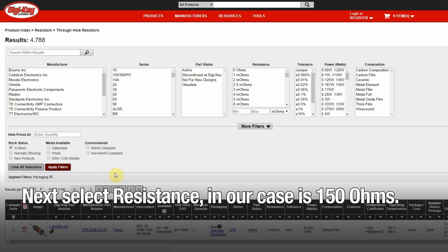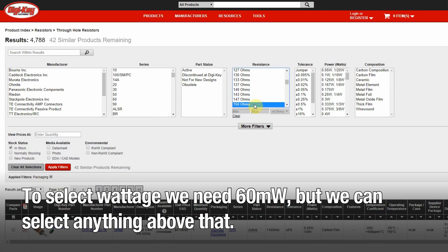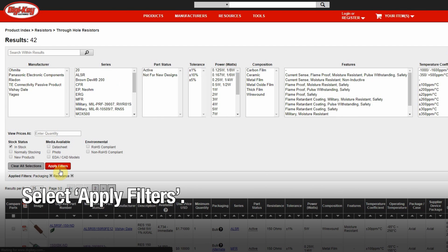Next up, we'll select the resistance, which in our case is 150 ohms. Then we'll move on to the wattage. In our case, we need 60 milliwatts, so we'll select anything above that and select apply filters.